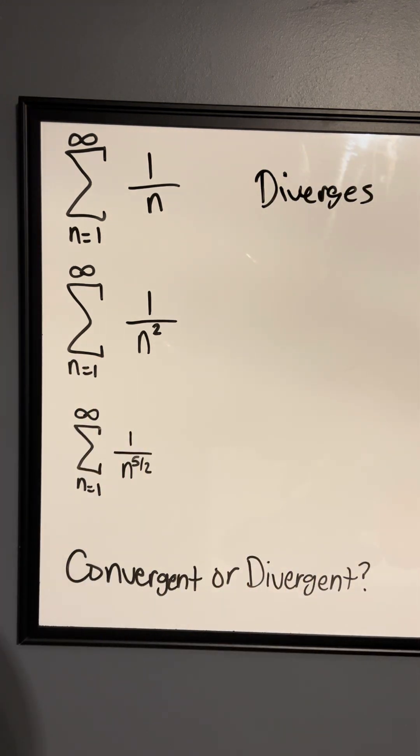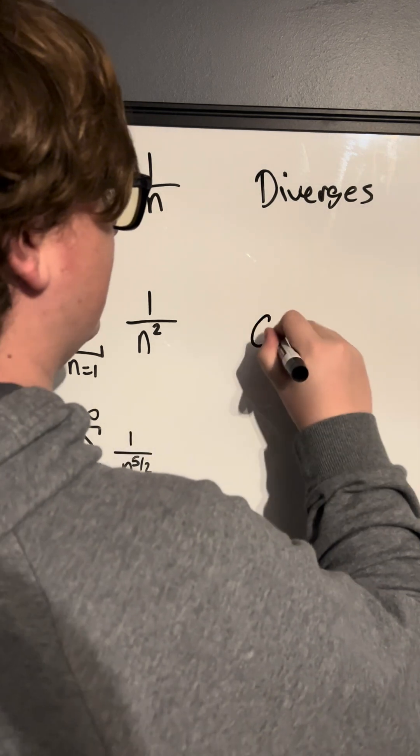This series, we have 1 over n squared. Well, 2 is greater than 1, so by definition, it has to converge because it's a p-series.